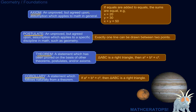Proof is important, but you can't prove everything. There are certain ideas that we've all basically decided can't be proven, but we don't need to prove them because they're just so obvious. In fact, we need to just agree that they're true so that we can prove other stuff and move forward. So an axiom is an unproved but agreed upon assumption which applies to math in general.